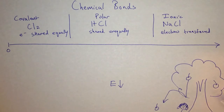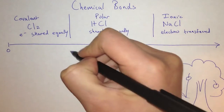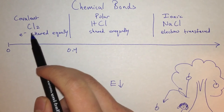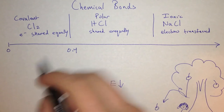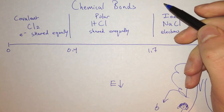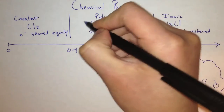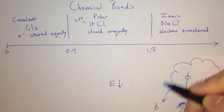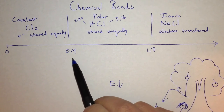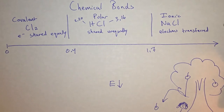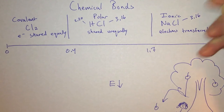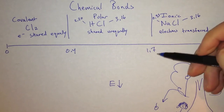In our class, we define a covalent bond as anything from a difference of 0 to 0.4 on the Pauling scale between the two atoms. In our case, chlorine's electronegativity is 3.16, and it's bonded to itself, so the difference is 0. A polar covalent compound is between 0.4 and 1.7. For example, hydrogen's electronegativity is 2.20 and chlorine's is 3.16, so the difference is about 1, which is between 0.4 and 1.7. In an ionic bond, it's a difference greater than 1.7. Chlorine is 3.16 and sodium is 0.93, which is definitely greater than 1.7.